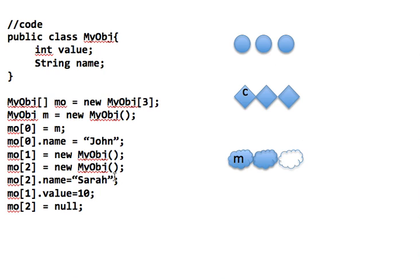If I want to go back to making it a placeholder, I would have to say mo[2] equals null, and that would effectively remove the contents of the object and leave the placeholder again. I hope you've understood how arrays work mostly with your own objects, and why — although MyObject has a string in it — you cannot put a string into the array, because Java has assigned it a very different shape and will only take elements of that same shape. Only MyObject objects, regardless of what's inside.